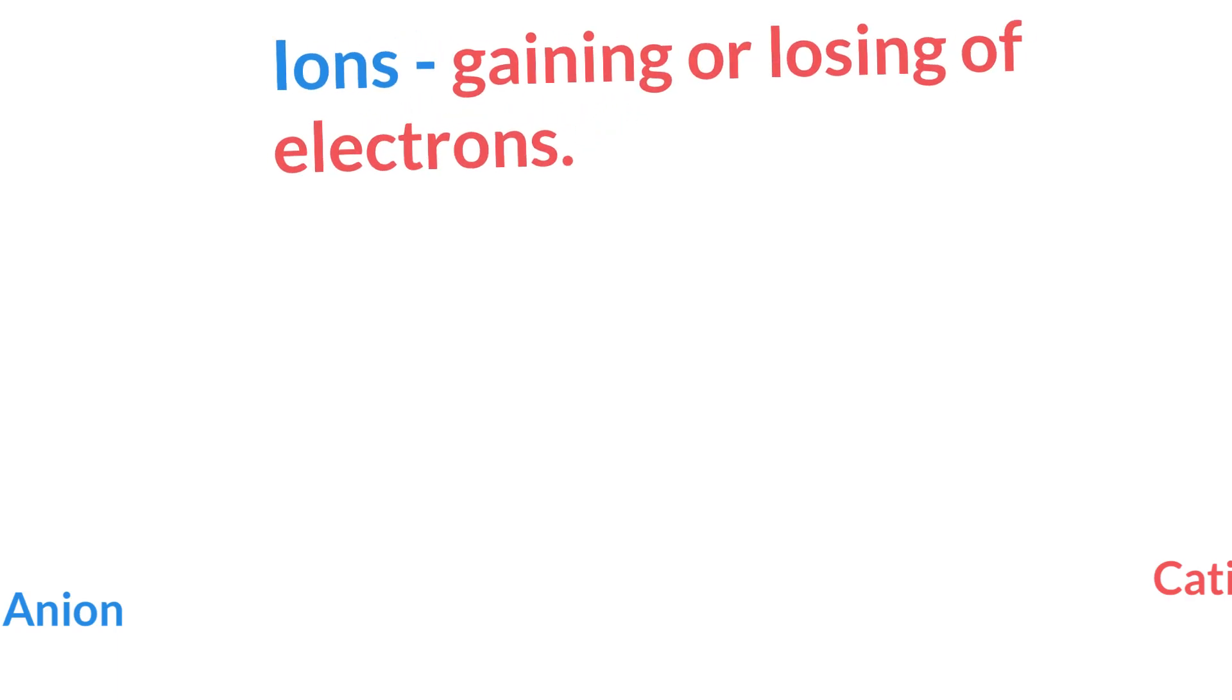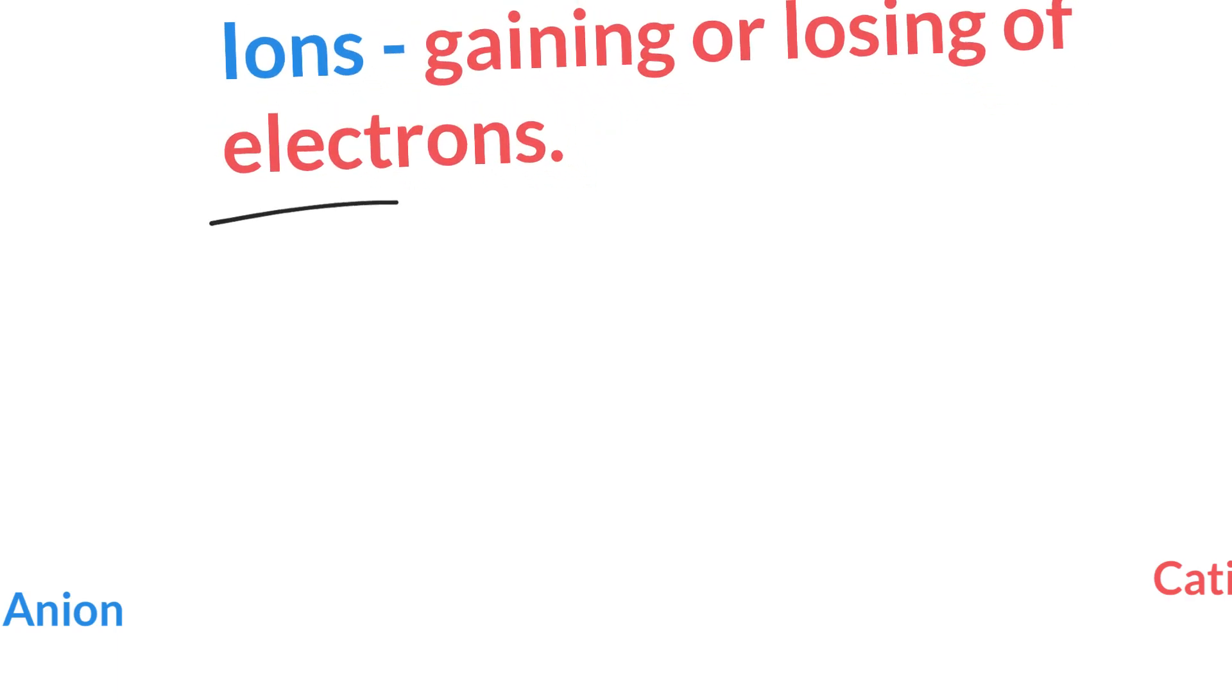All right, so let's talk about what an ion is first. An ion is basically gaining or losing of electrons. That's what an ion is. So, you'll have two kinds here. Obviously, you're either gaining or losing.